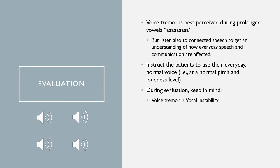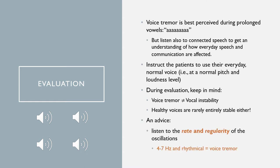Another important aspect to consider during evaluation is that healthy voices are seldom entirely stable either, and it can be difficult at times to distinguish subtle voice tremor from normal movements in the vocal system. If I were to give you advice on how to distinguish voice tremor from other types of vocal movements, it would be: listen to the rate and regularity of the oscillations. Voice tremor should be fairly rhythmical and at a rate of approximately 4 to 7 Hz. Here is a recording of a patient with very slow tremor — you can almost hear that the respiratory muscles must be affected — and here is a recording of a patient with a more typical voice tremor rate.